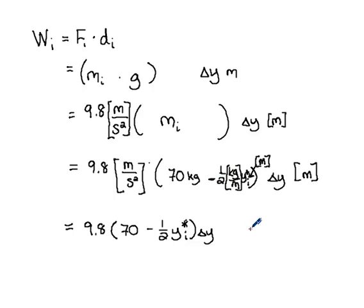So this is 9.8 times 70 minus one half y sub i star delta y. And what we pulled out back here is we have meters times kilograms, kilograms times meters per second squared. And then we have this extra little meter right here, times meters. And if you take a look at that, that's newtons, meters, newton meters, which is work. The force to move was just mass times gravitational pull, mass times acceleration. The mass is the hardest part. He has a starting mass, but he's losing some. We found out it's a half a kilogram per meter times the number of meters we've pulled them up.